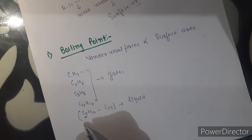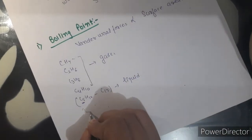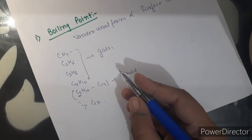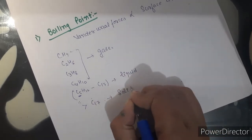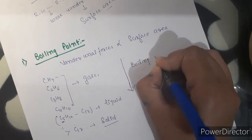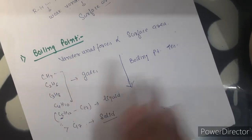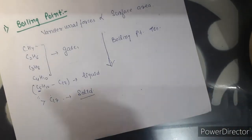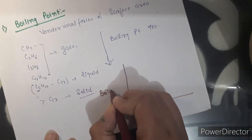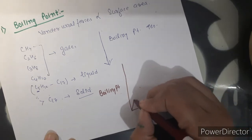As the number of carbon atoms increases, surface area increases, so van der Waals forces of interaction increase, and the magnitude of forces of interaction increases — hence they behave like a solid. So we can say that as we increase the number of carbon atoms, boiling point increases because surface area increases, and due to increase in surface area, magnitude of van der Waals forces increases. We can plot a graph between boiling point and number of carbon atoms, and with the increase of carbon atoms, boiling point increases regularly.